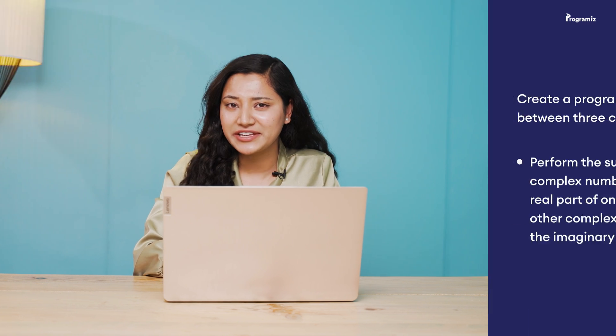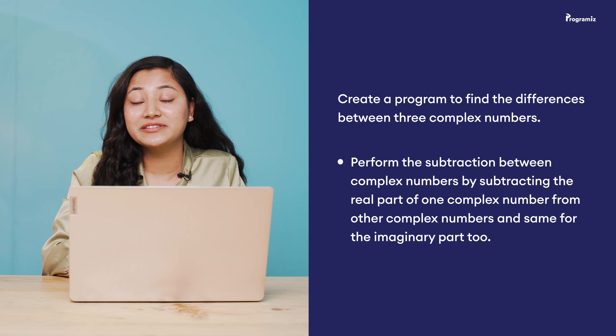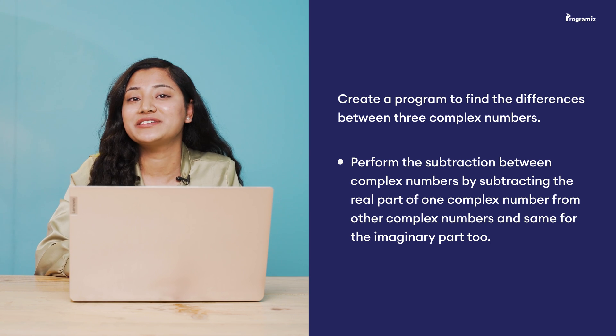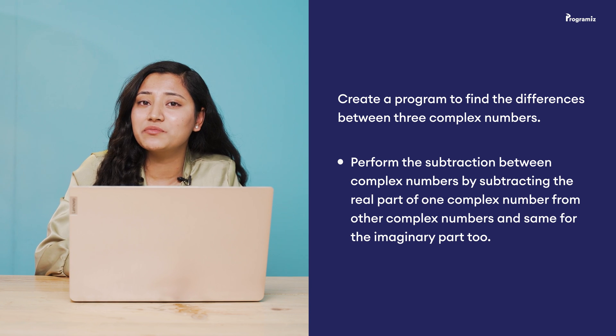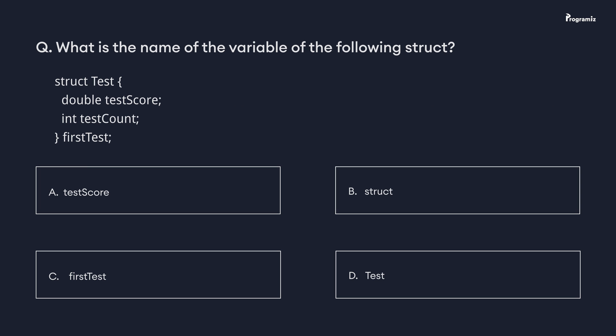Now to revise what you have learned, here is a programming task for you: create a program to find the difference between three complex numbers. To perform subtraction between complex numbers, subtract the real part of one from the real part of another, and the imaginary part of one from the imaginary part of another. You'll find the answer in our GitHub repository — the link is in the video description below. Now, for the programming quiz: what is the name of the variable of the following struct? Comment your answer below. See you in the next video — happy programming!